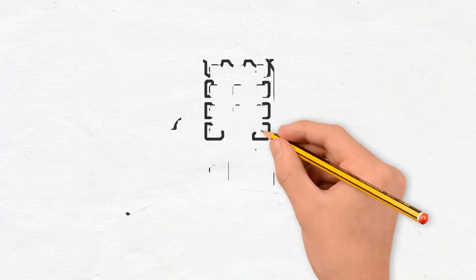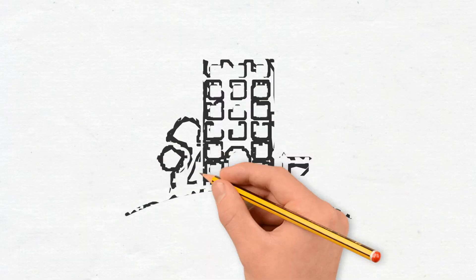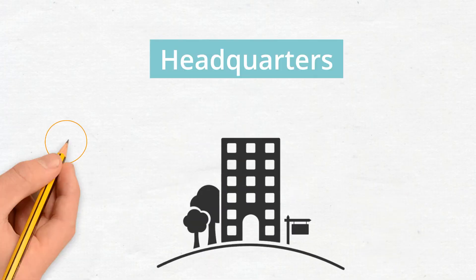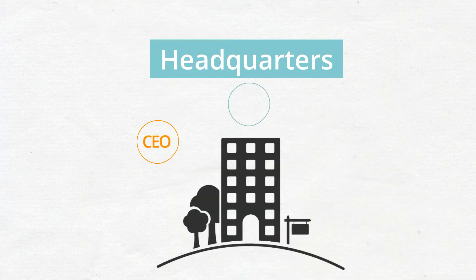Global companies like Facebook and Coca-Cola have offices all over the world, but they do have one main office called their headquarters. The headquarters is where all of the top-level CFO, CTO, and C-level positions operate their business. Let's imagine that the headquarters is the brain of the company.